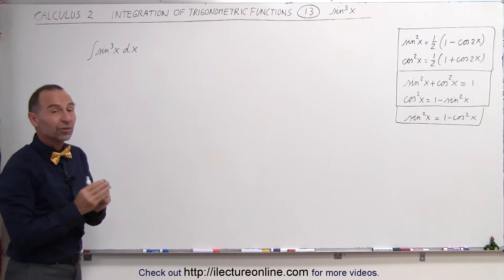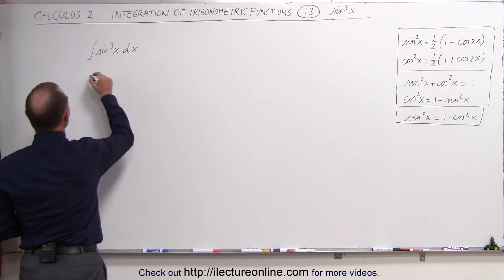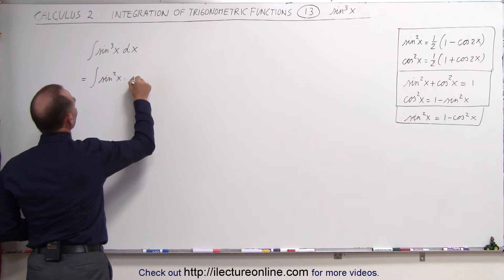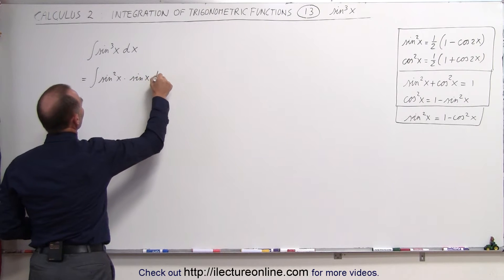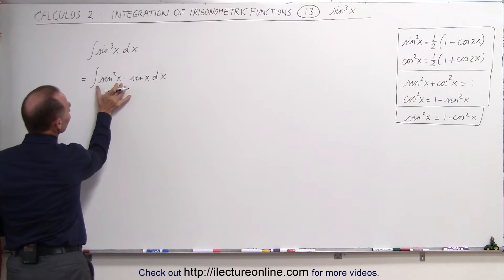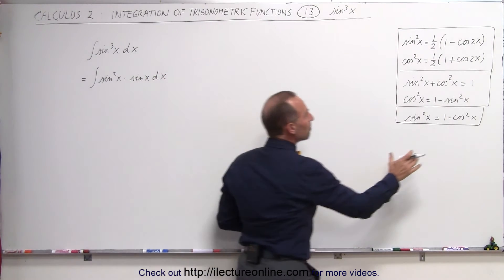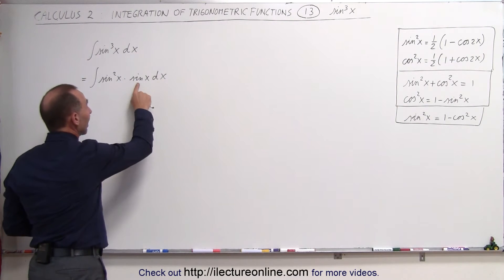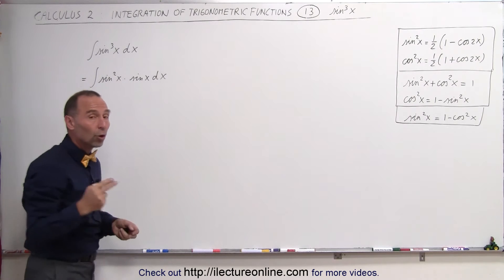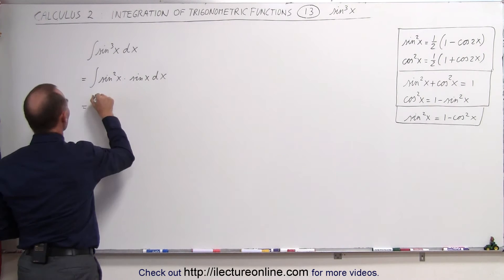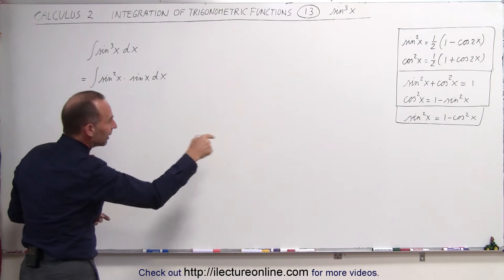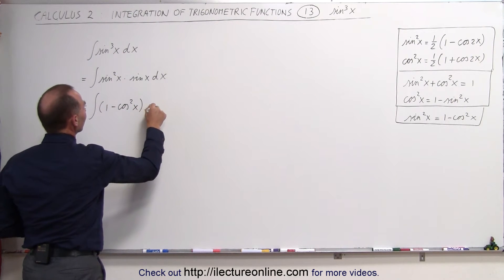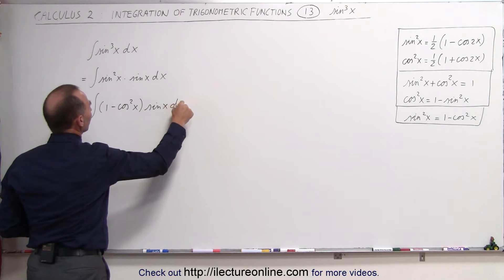What we're going to do is separate sine cubed of x into sine squared of x times sine of x times dx. Then we're going to replace sine squared of x by 1 minus cosine squared of x, multiplied by sine of x times dx.